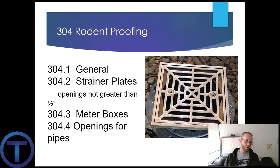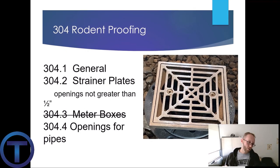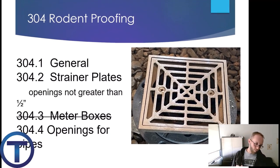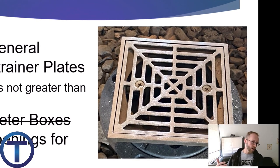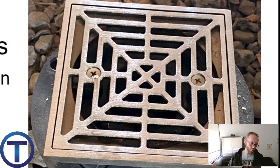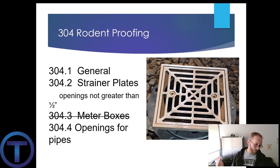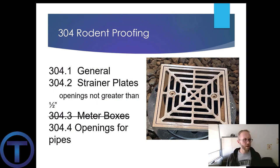304: Rodent proofing. This may not be a huge problem where we live, but in many areas of the world the sewers are rampant with rodents and they will come up your pipes — swim right through the bowl of your toilet. 304.1 says we have to prevent rodents from coming into structures. 304.2: strainer plates on drains or other openings have to have a maximum opening size of half inch. 304.3 regarding meter boxes has been deleted by the Utah amendments — here in Utah we don't even have meter boxes, so you can put a line through that section.